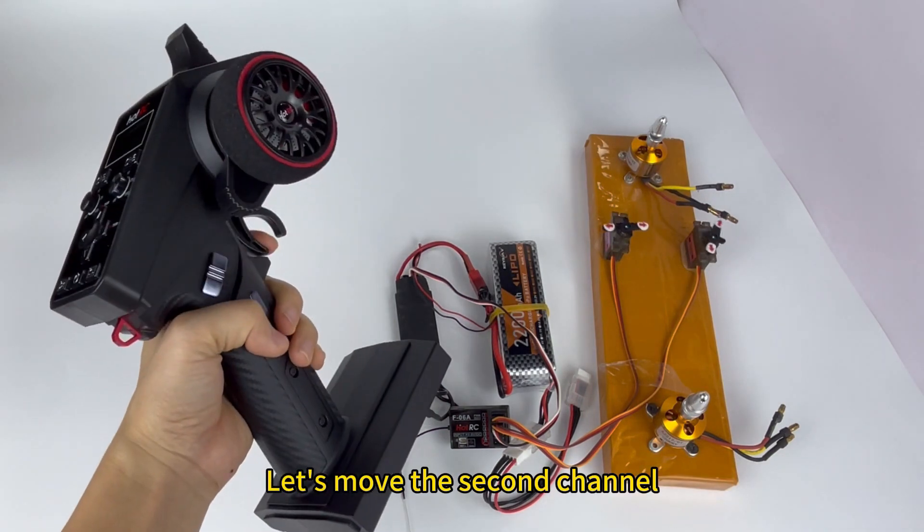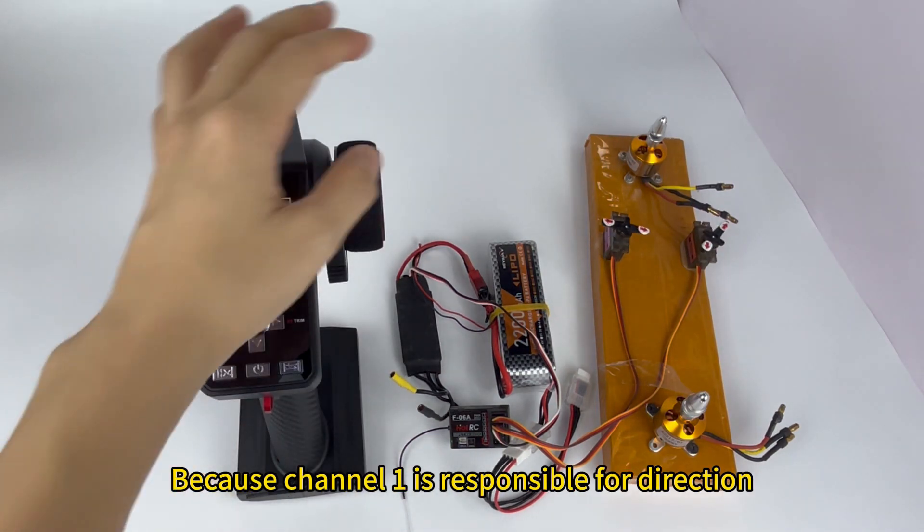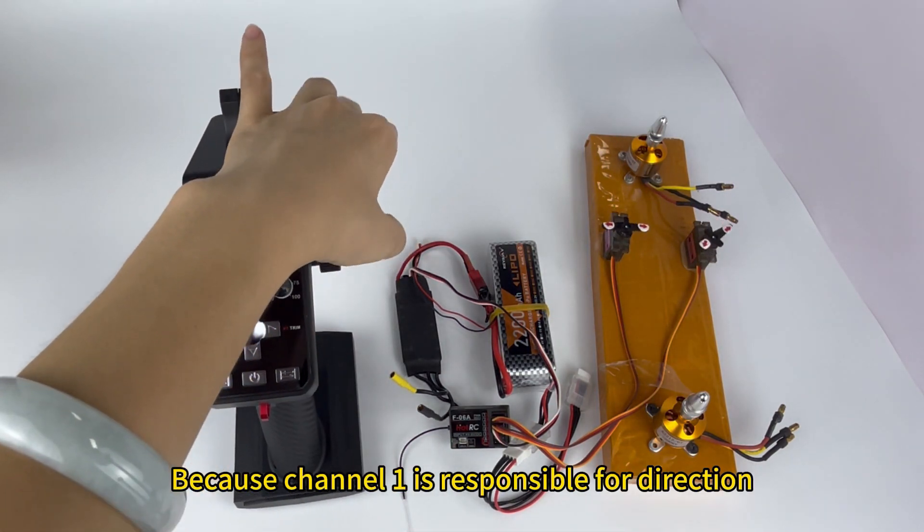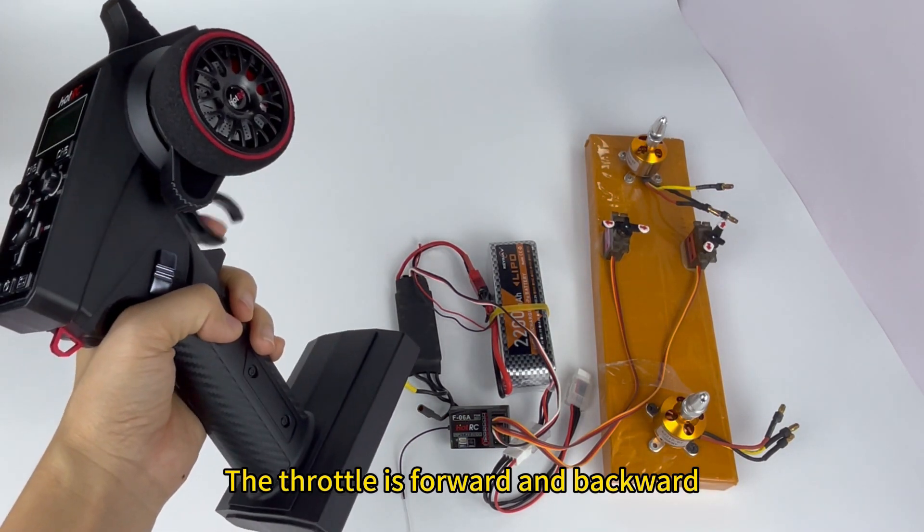Let's move channel 2. The two servo motors rotate in the same direction. Because channel 1 is responsible for direction, this is how differential steering is achieved. The throttle controls forward and backward.